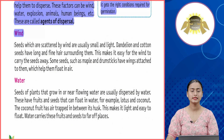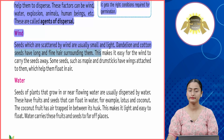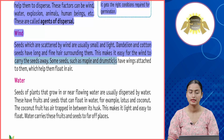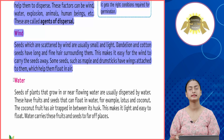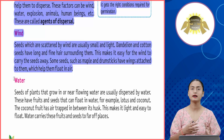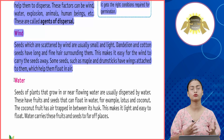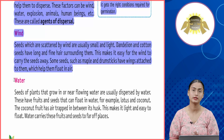Wind: seeds scattered by wind are usually small and light. Dandelion and cotton seeds have long, fine hairs surrounding them, making it easy for the wind to carry them away. Some seeds, such as maple and drumsticks, have wings attached to them which help them float in air. These seeds are very light and disperse easily through the wind.